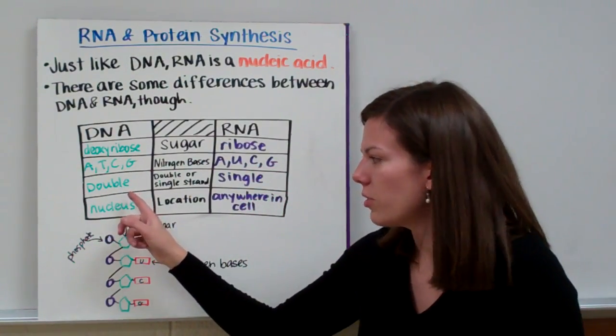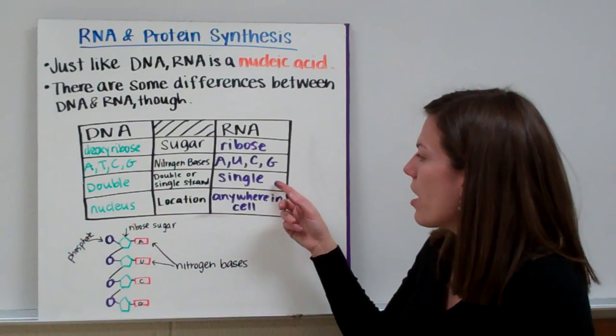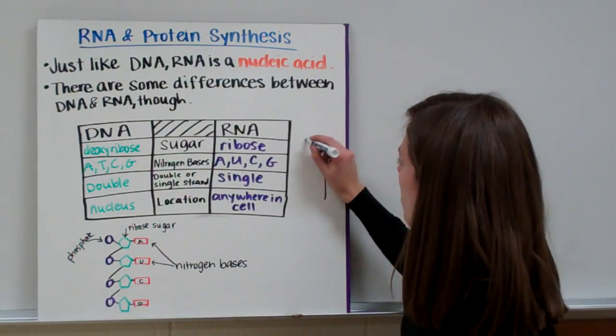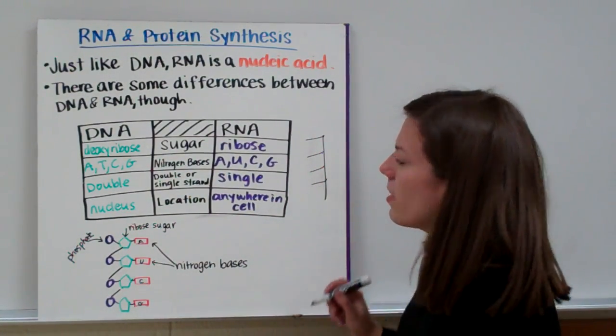Also DNA is double stranded, so it looks like a ladder. Whereas RNA is single stranded. It looks like a ladder that has been chopped in half.